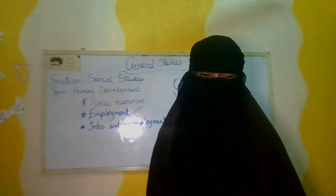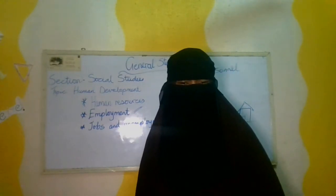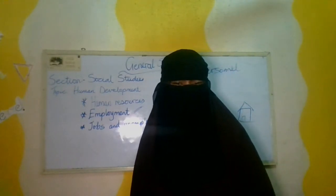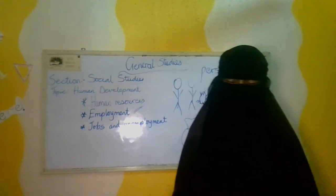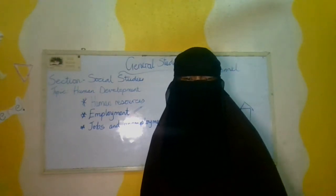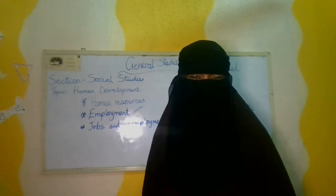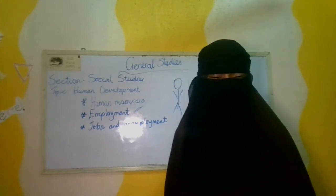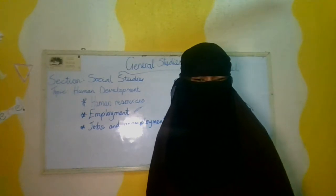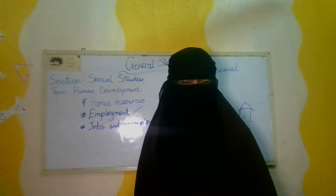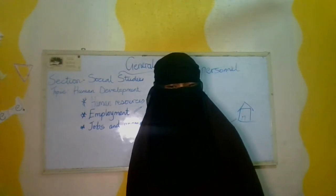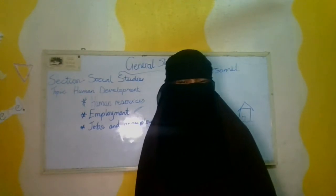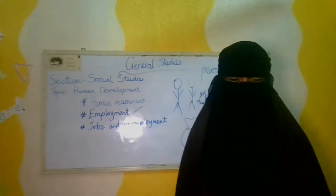What are human resources? Human resources are the people that actually work in an organization or establishment. They're the ones that make sure that things are actually running. So in an establishment like a school, the people that make it work — the teachers, the cleaners, the security, the drivers — everyone is actually a part of the human resources.